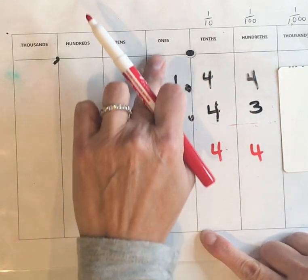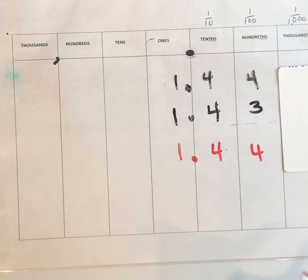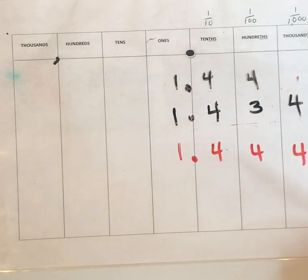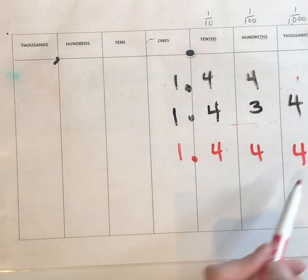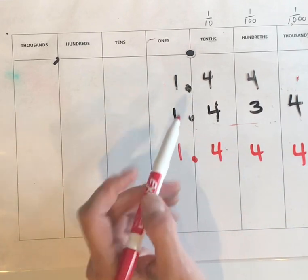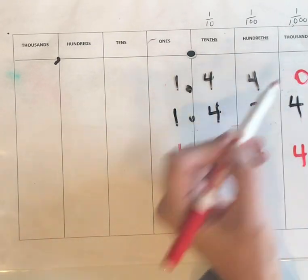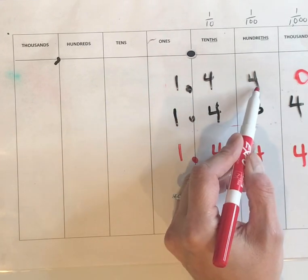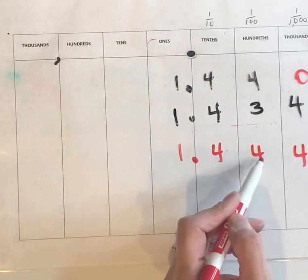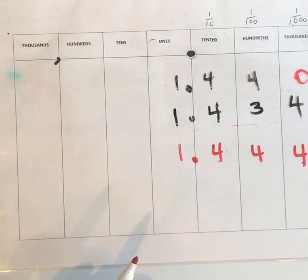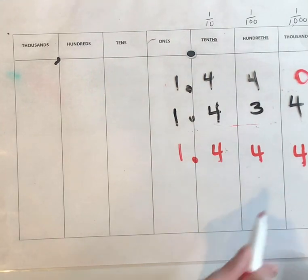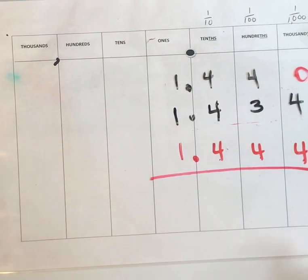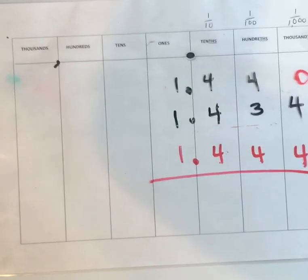Now we're really going to use the thousandths place. To figure out which of these numbers is larger, we go back to the thousandths place and decide: is one and four hundred forty thousandths or one and four hundred forty-four thousandths bigger? If you decided one and four hundred forty-four thousandths, you are correct.